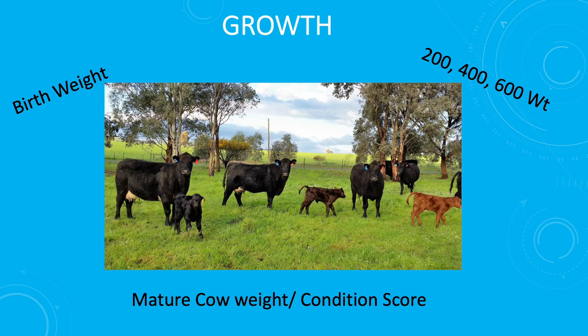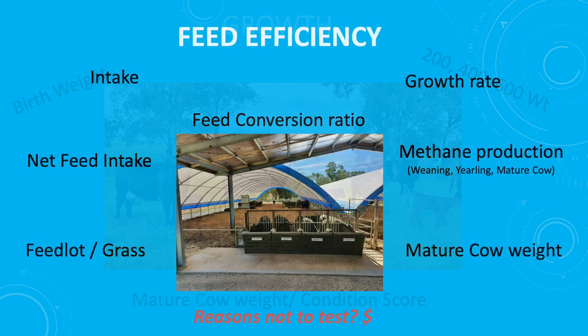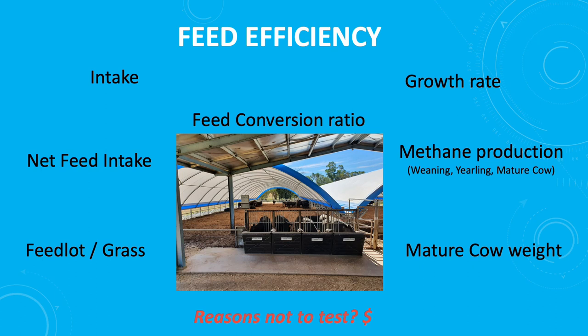We basically collect — or should be collecting — all those figures: mature weight, condition score, all of those things are becoming very important. Feed efficiency — you might be surprised that one's up there. A 10% change in feed efficiency can affect profitability by 40 to 50%. That's a statistic that comes from all around the world, not made up. That's our facility — we've got the Grow-Safe feeders recording the daily intakes.